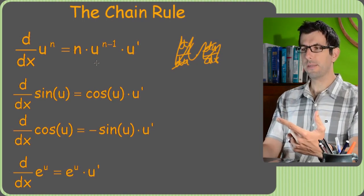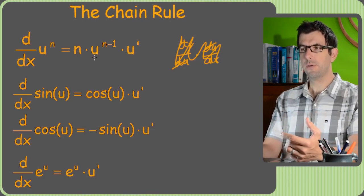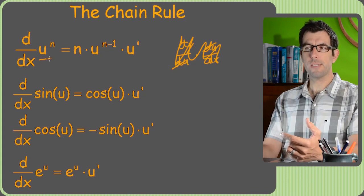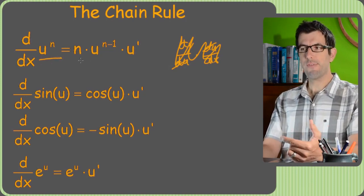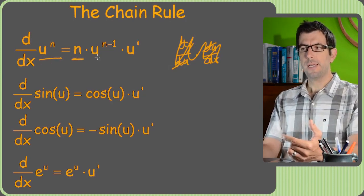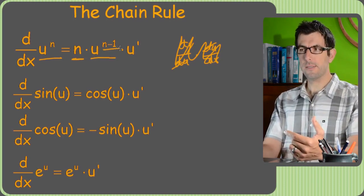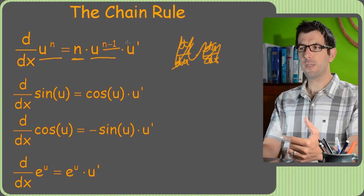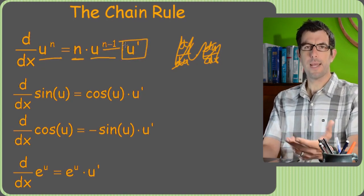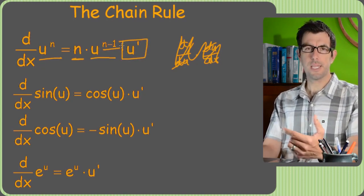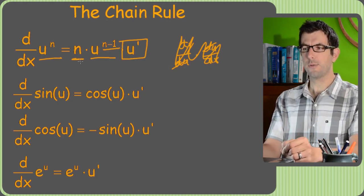Alright so here's a bunch of formulas and they should look familiar to you. We've got the old power rule. If we had something to the power of n, the derivative is the old exponent times the same thing to the new power which is one less. But then this is the new guy, this u prime on the end. That's what's gonna allow us to take the derivative of stuff other than x to a power.